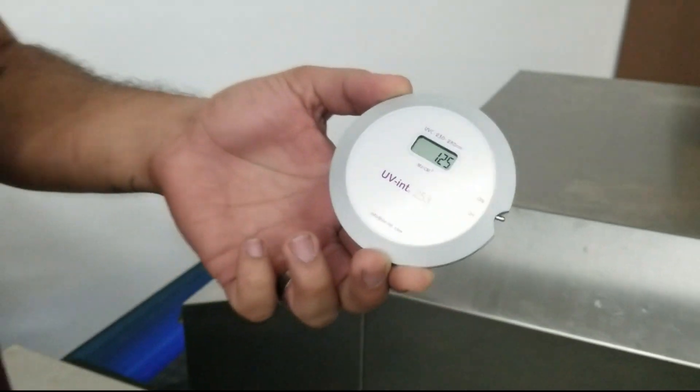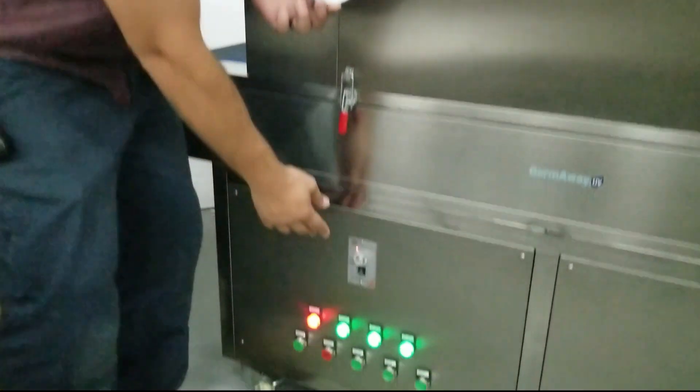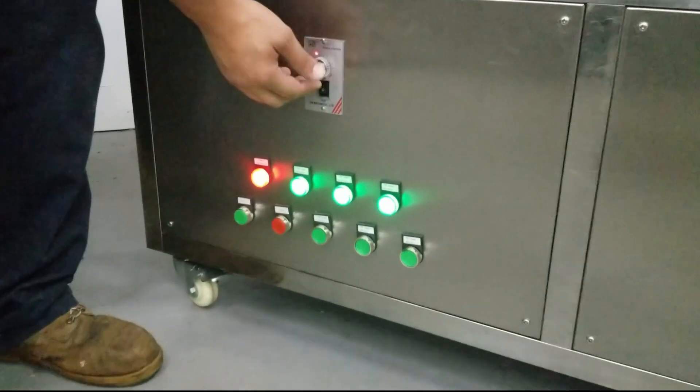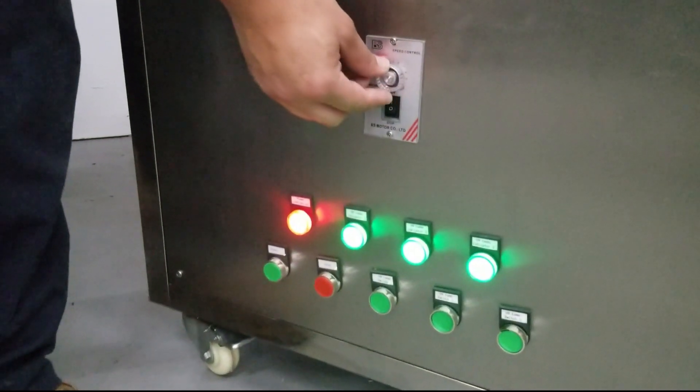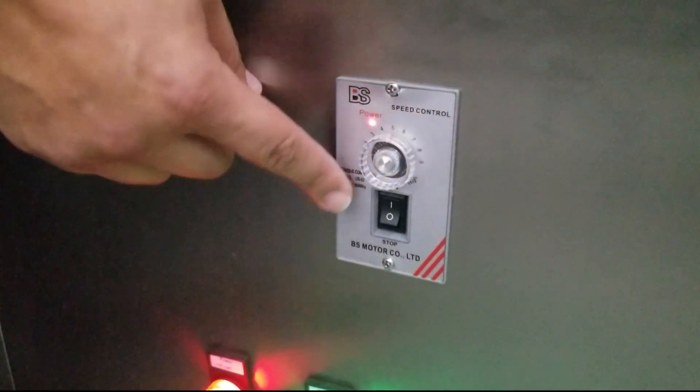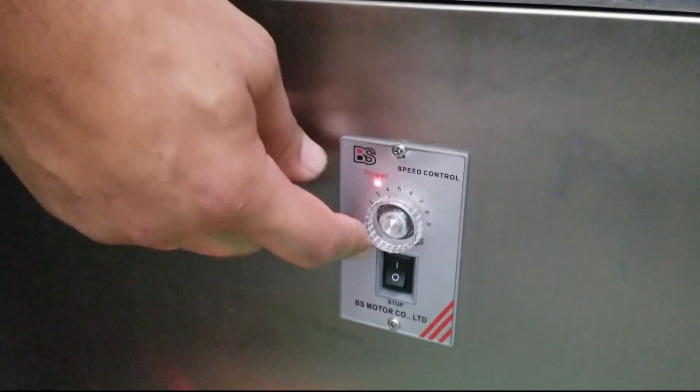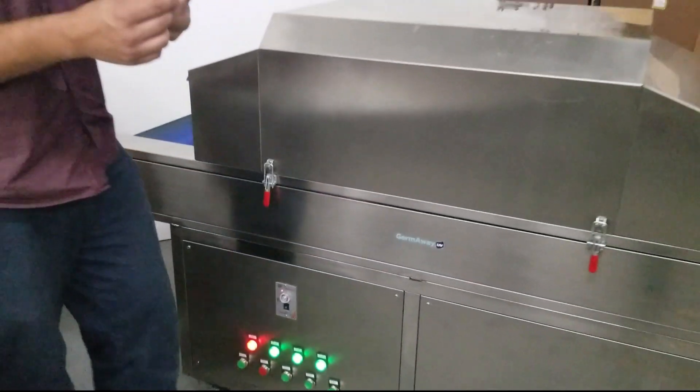Now of course, if you need more than that, you can change the speed. How you would do that is you go over here and you can modulate the speed of the conveyor. The lights maintain the same intensity, but it's just exposed for a longer period of time. So let's try that again, just for funsies.